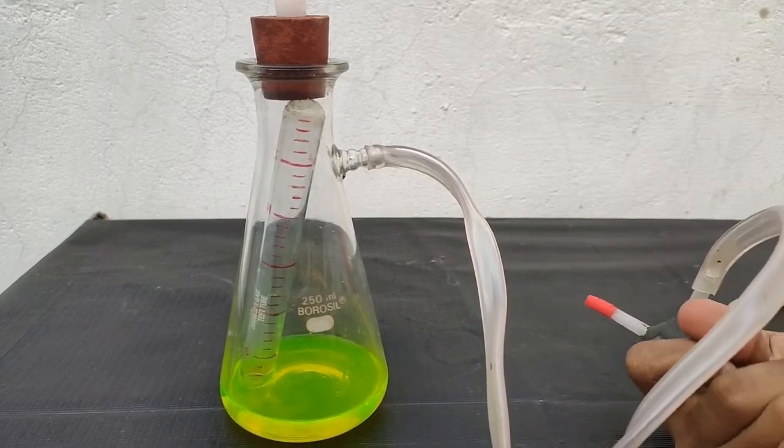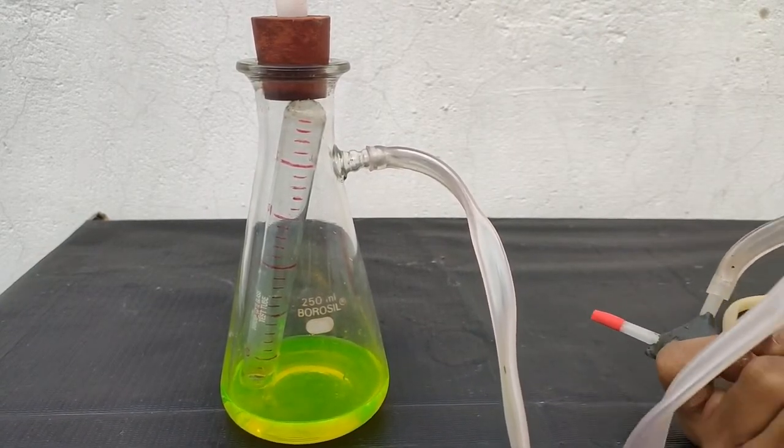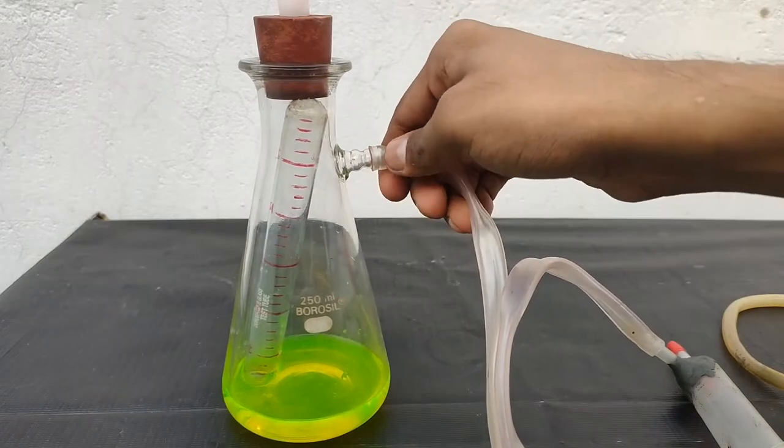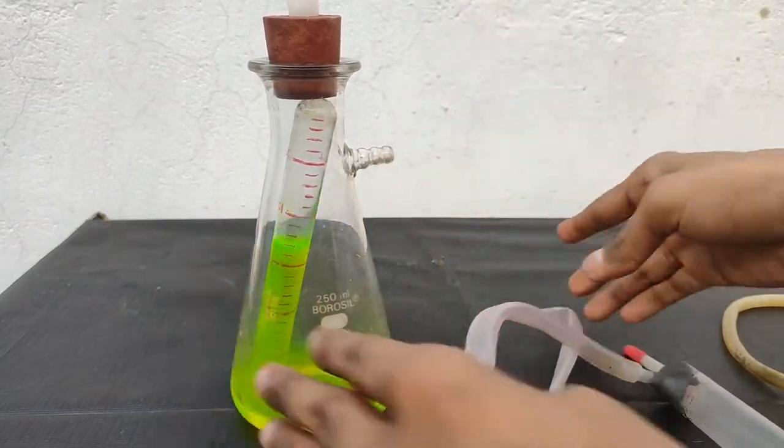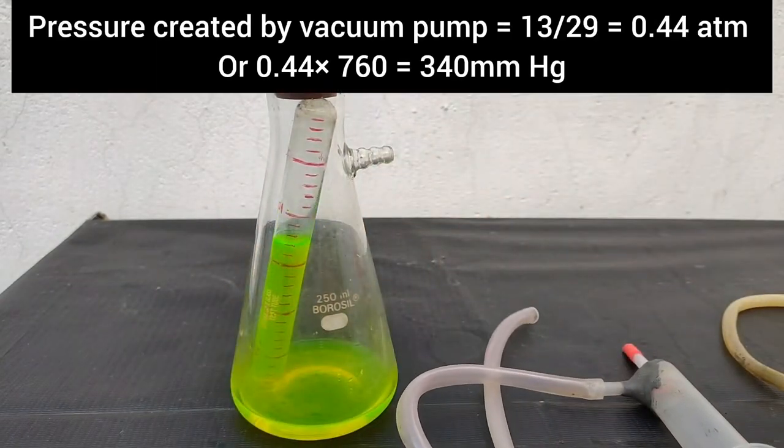When I was unable to pull the pump, I released the vacuum inside the flask. On releasing the vacuum, the water in the test tube rose up to 13 ml. Therefore, the pressure inside the flask was 0.44 atm or 340 mm of Hg.